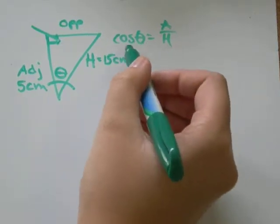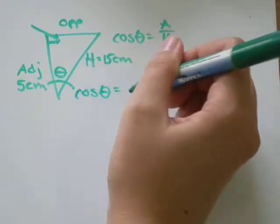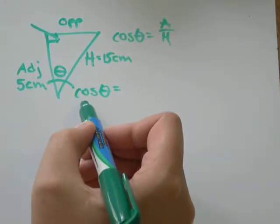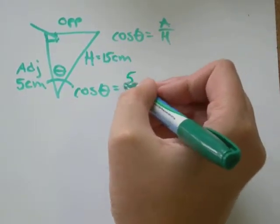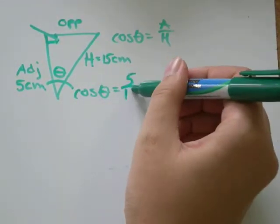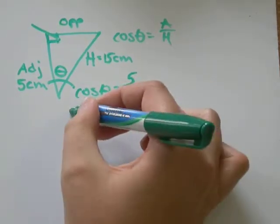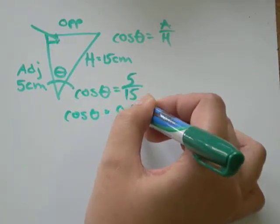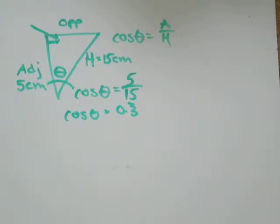So, same formula, plug in everything you know. cos of theta. Well, I don't know what theta is, but I do know I'm using cos. Adjacent is equal to 5 centimeters divided by hypotenuse is 15 centimeters. I'm just going to go 5 divided by 15. And I get cos of theta is equal to 0.3 repeating. So it's 0.3333 forever.